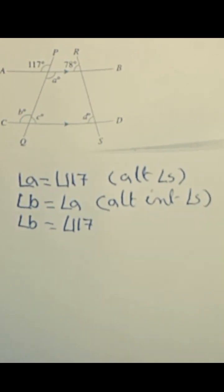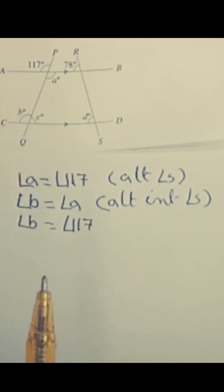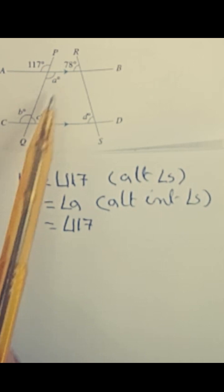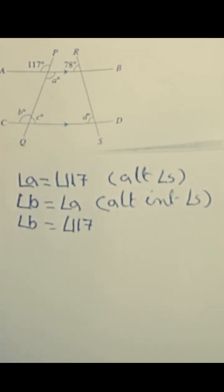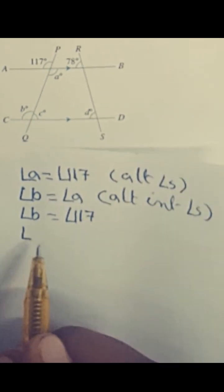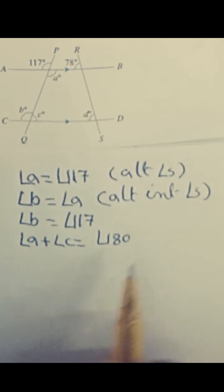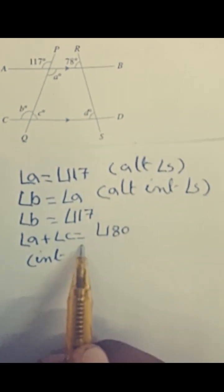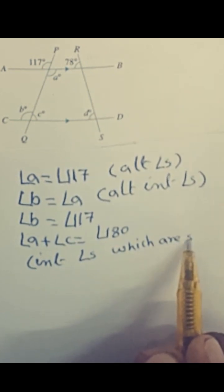Now for angle c: angle c is neither alternate nor corresponding to any angle. However, angle c and angle a are supplementary angles because they are both interior angles lying on the same side of the transversal. Therefore, angle a plus angle c equals 180°, as these are co-interior supplementary angles.